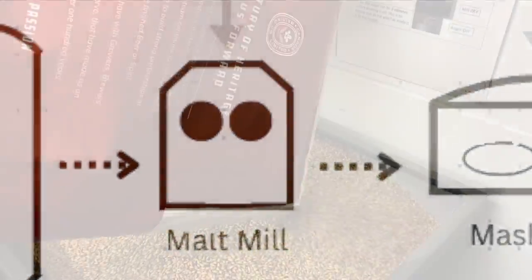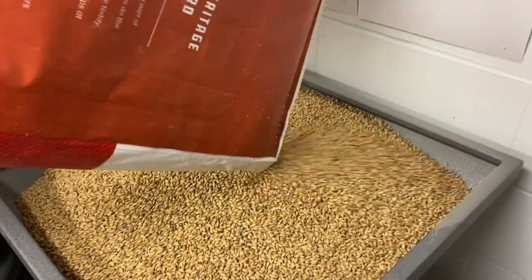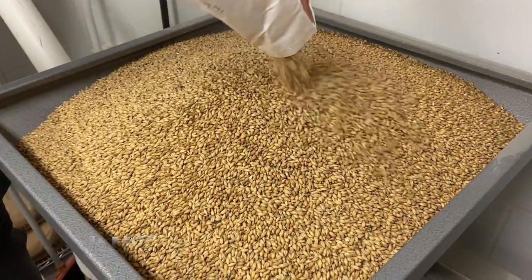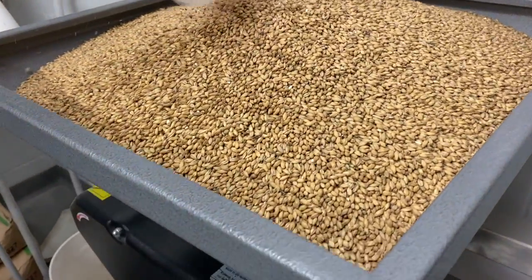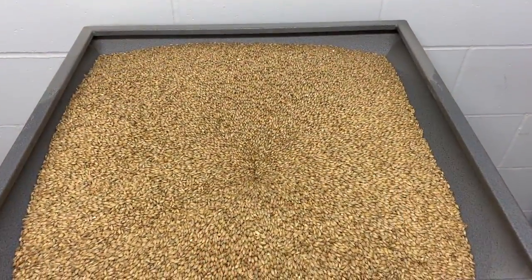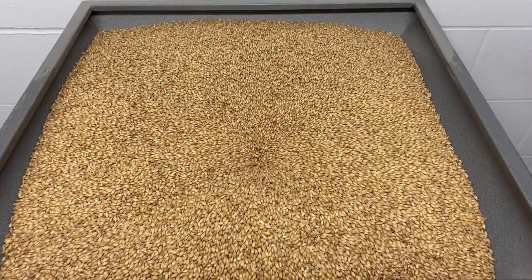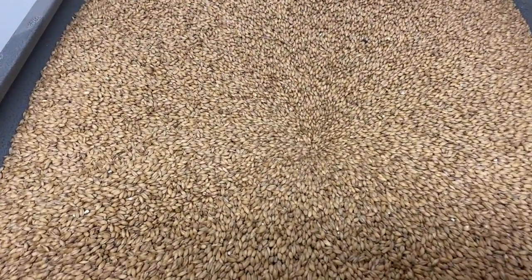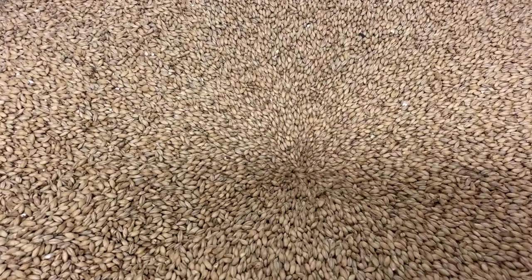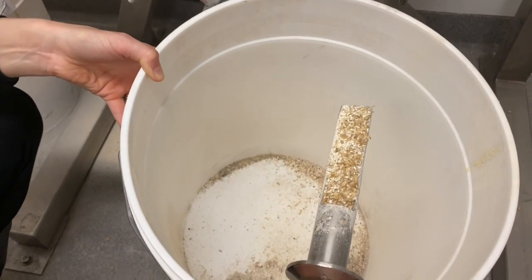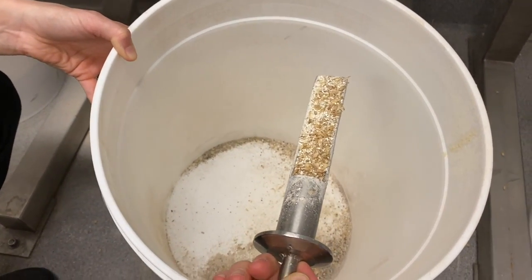The first step in the brewing process is malt milling. The malt is being crushed between a set of rollers in a mill. The purpose here is to split the barley husk open, because that husk is going to form a filter bed in the lauter tun, and to crush the inside of the grain so that the starch becomes exposed to the environment, which will allow enzymes to convert that starch into sugars during mashing.